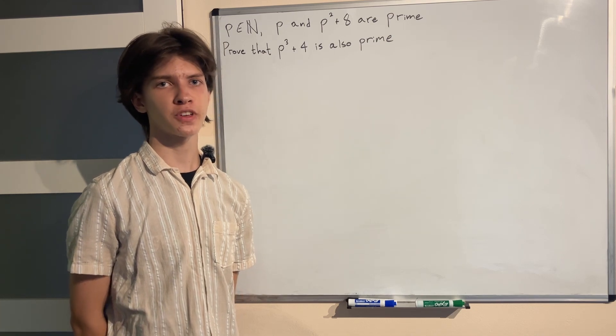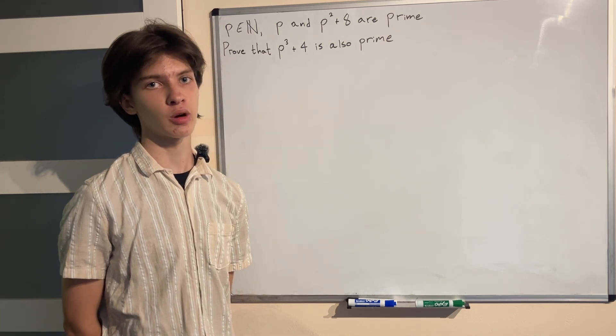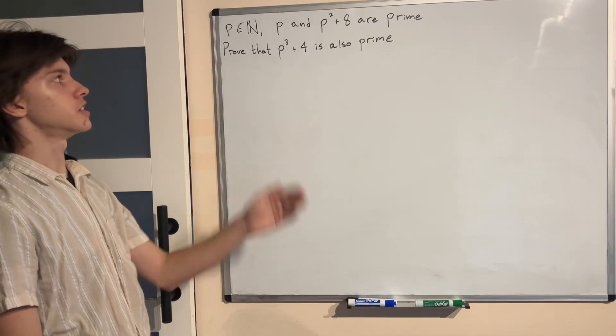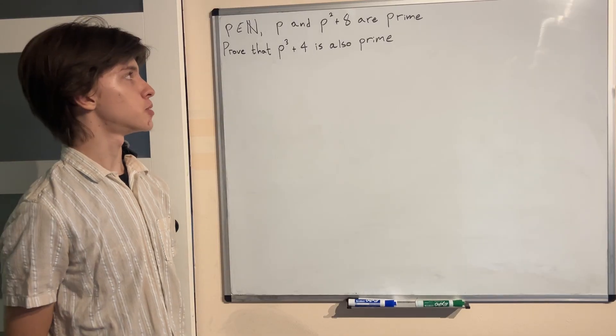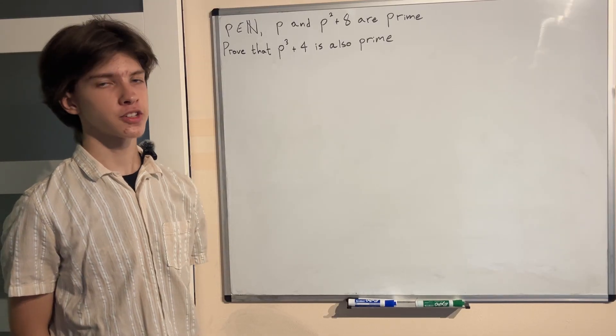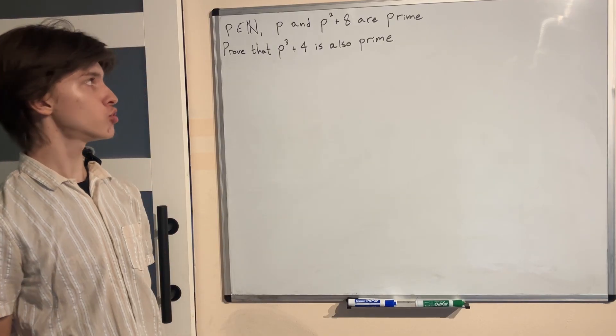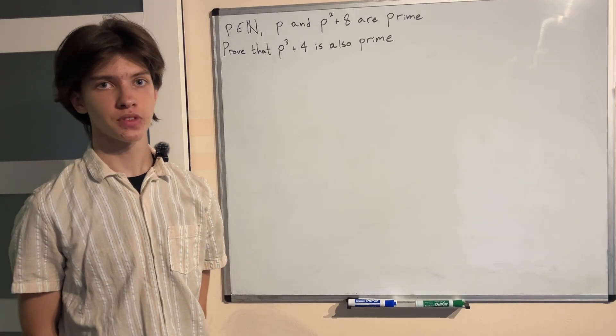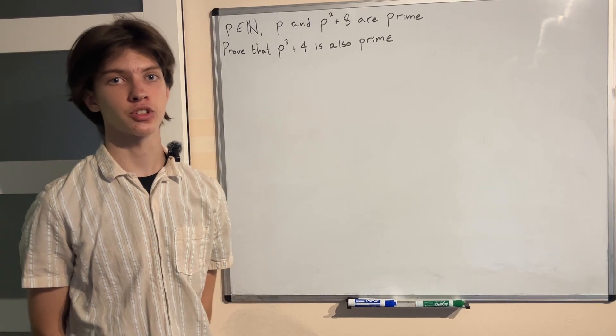Welcome everyone. Today we're going to be solving quite a strange number theory problem. We're given that p is a natural number and that p and p² + 8 are both prime numbers. We have to prove that p³ + 4 is also a prime number under those conditions.